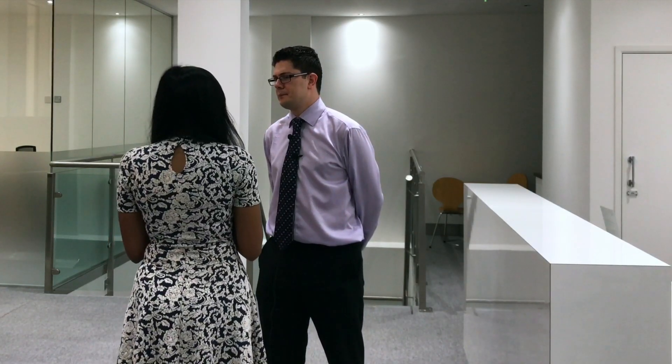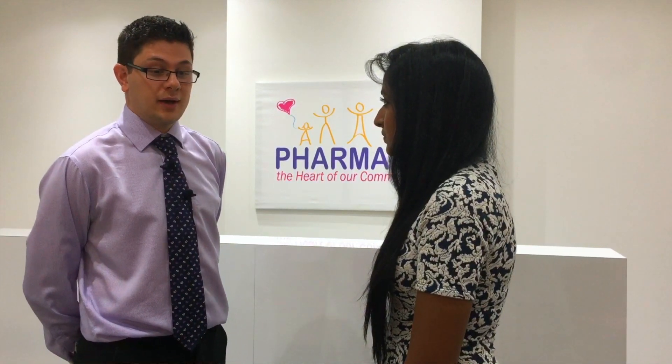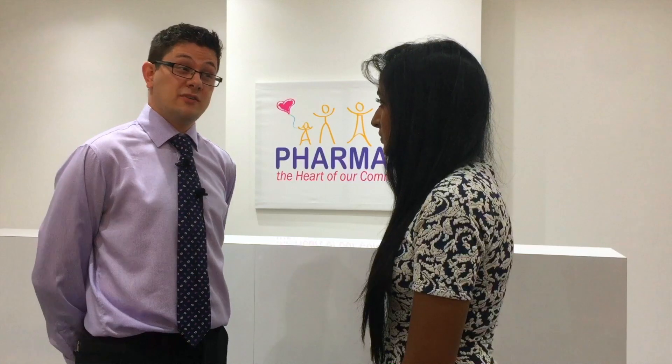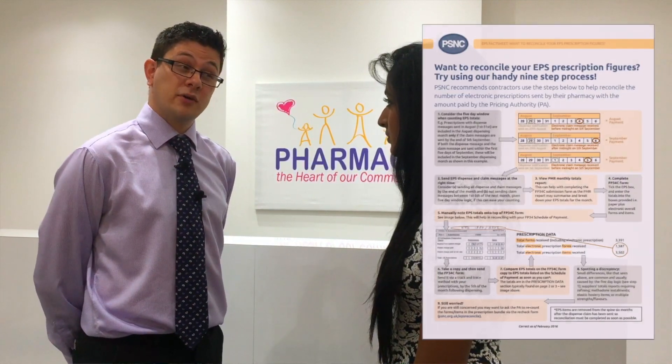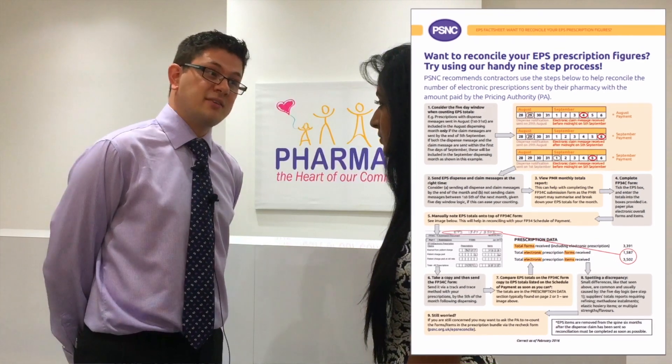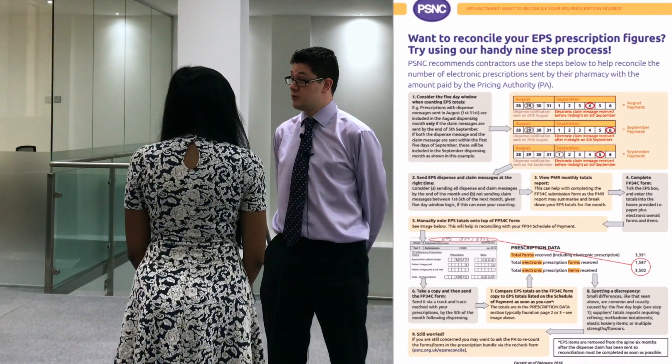So you mentioned the dispense message and the claim message — what does that actually mean? Those are two messages which you can send using your PMR system. You are sending EPS messages to the spine in relation to a specific prescription. The dispense message is sent earlier in the process, and then later you send a claim message which helps trigger a claim by sending information to the pricing authority.